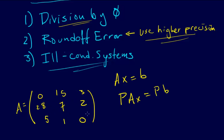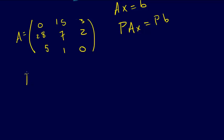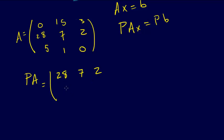So this is fantastic. If we get the right permutation matrix, then PA could be arranged so that 28 is in the first row, 15 in the first row as well, and we put the row with 5, 1, 0 in the second row — that way we don't have that zero down there on the main diagonal, which would be really bad. Then the row with 0, 15, 3 goes last. If PA equals that arrangement, then we would be okay.